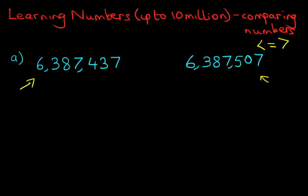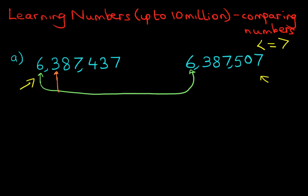Which symbol goes between these two numbers? The first thing we do is start to compare the numbers. We always start with the digit on the left — in this case, the millions. We compare this with the same digit on the left of the other number. Both of them are the same, so we move on to the next digit on the right. Now we've got 3, and comparing with the other side, that is also 3. So we still cannot tell which number is larger and which is smaller.